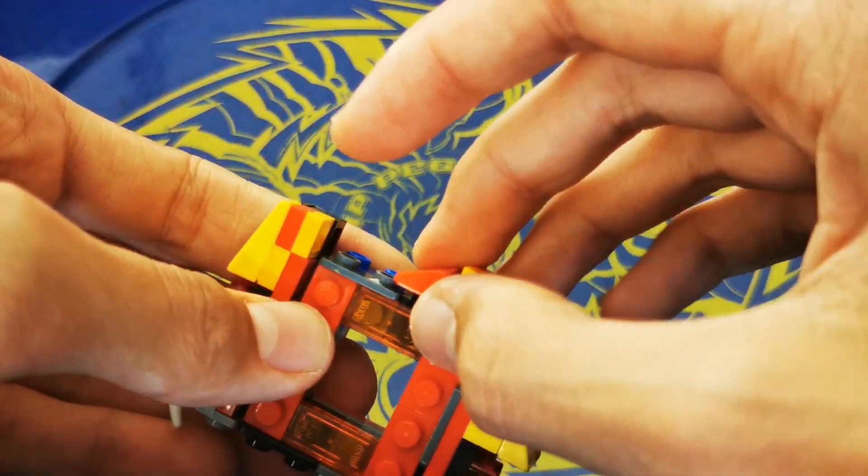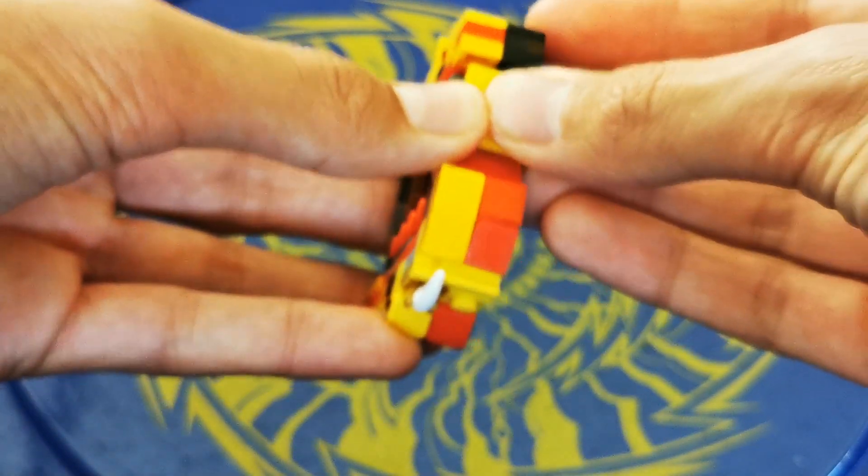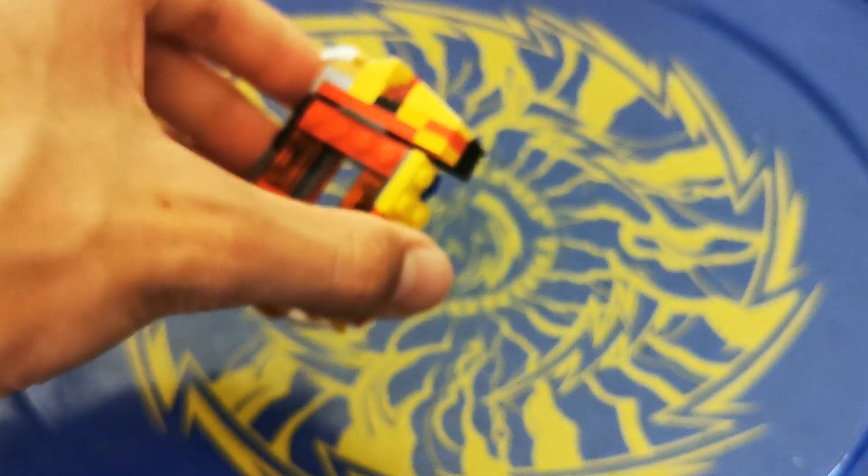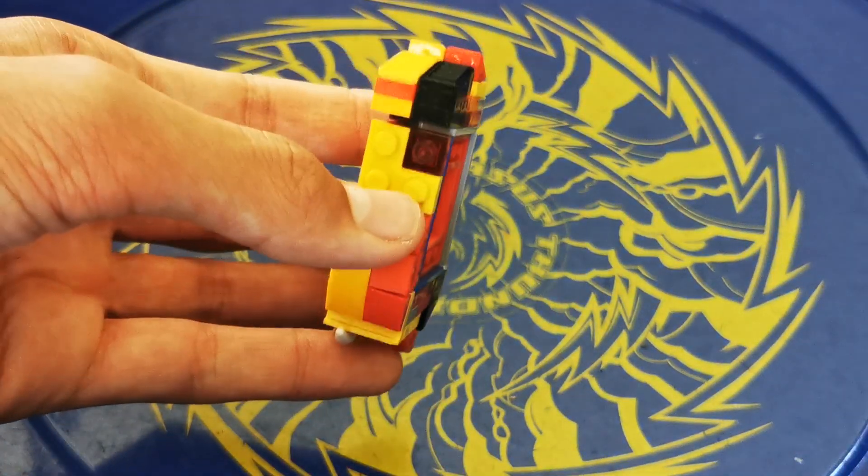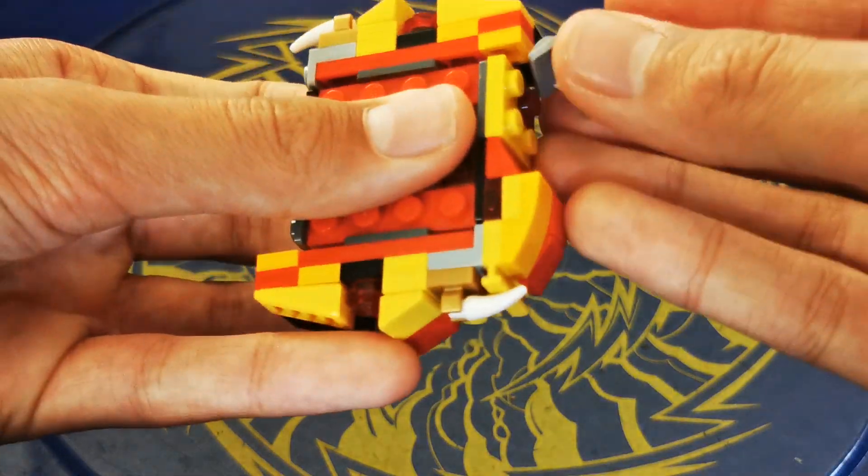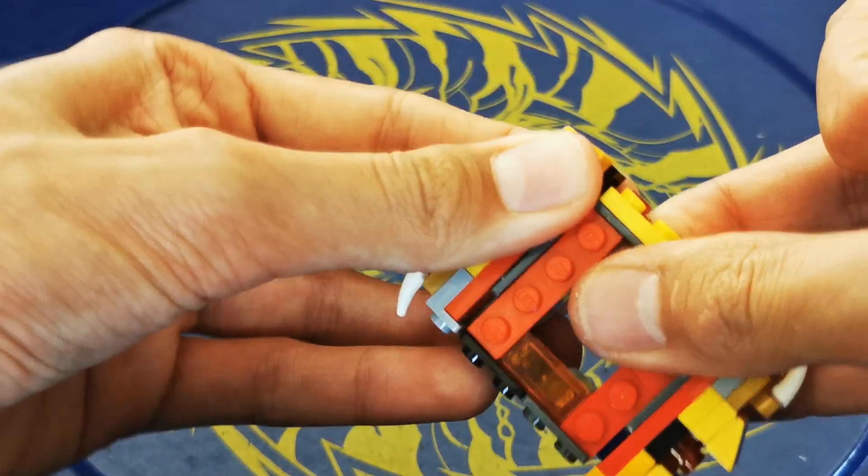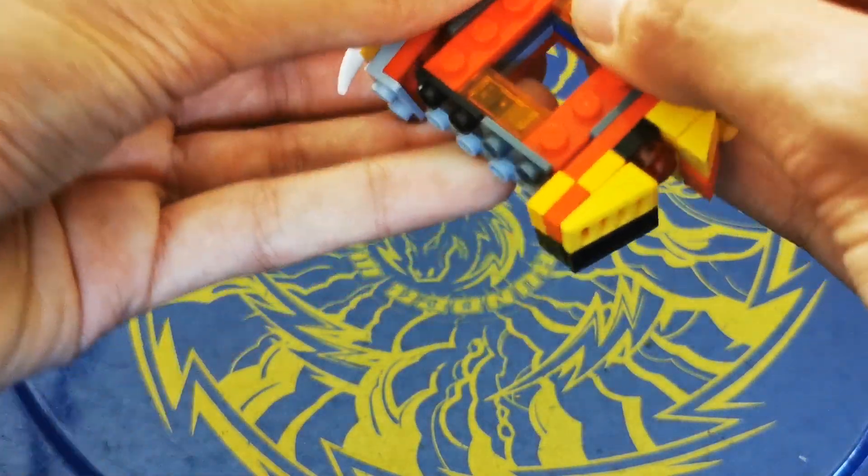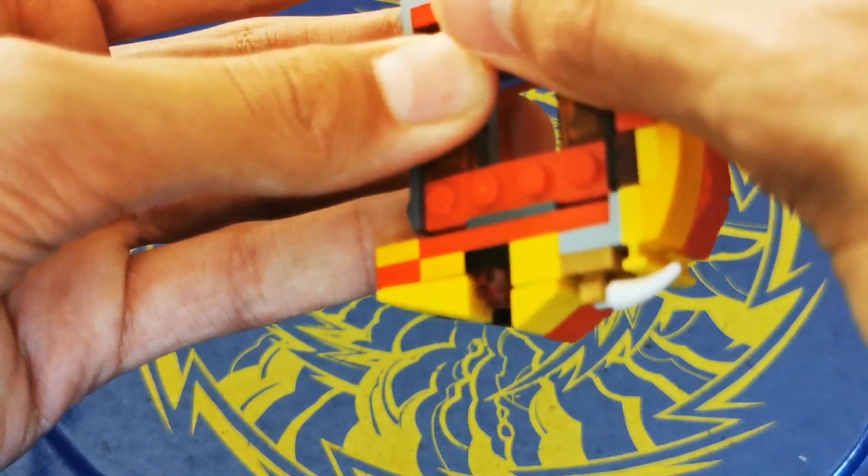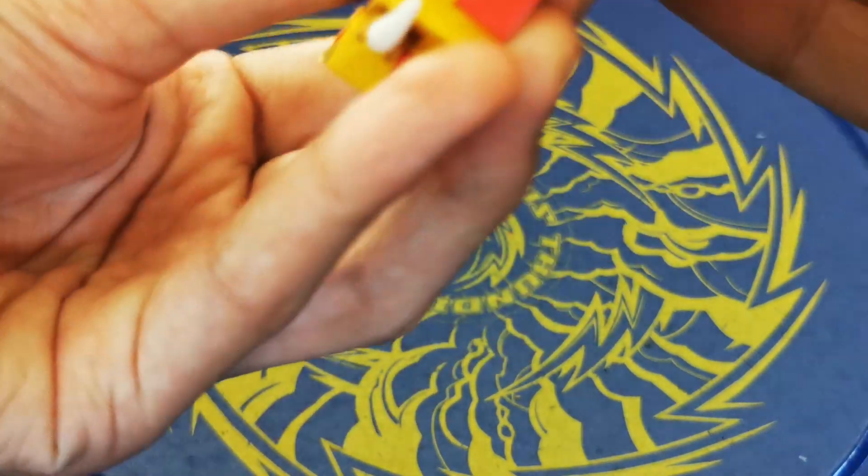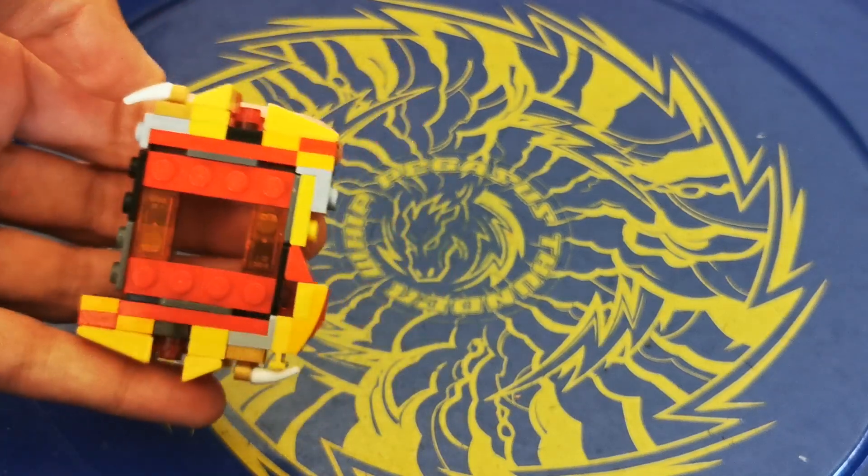Now grab a 1x2 red cheese slope and attach it there. Now attach a right-angle piece in normal yellow there, and a 1x1 square stud in see-through red there. Then attach this 1x2 bracket piece here. You might actually have to remove this part up here, so it might be a bit difficult.